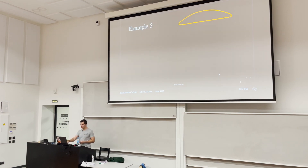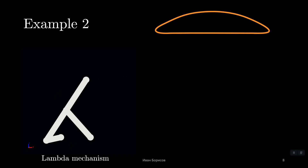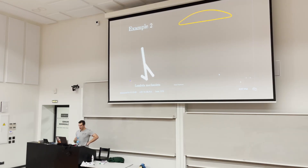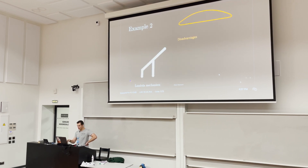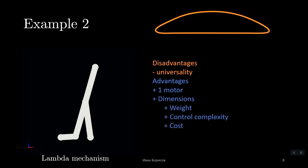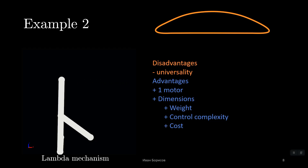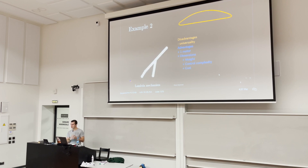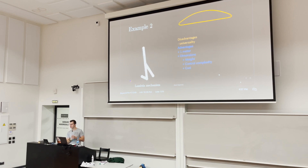A colleague suggested a 4-bar mechanism — it's called the Chebyshev-Lambda mechanism. It's capable of doing the same trajectory, though it's not universal anymore. But to do the motion, it only needs one motor and one sensor, which means less funding and much simpler control complexity — just one PID without any model.